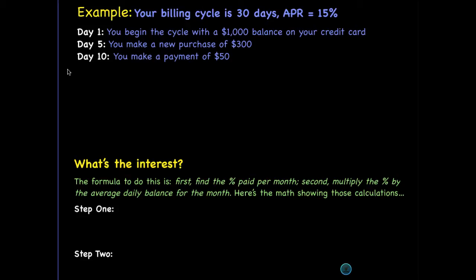You did nothing for four days. Then on day five, you made a new purchase of $300, which would increase your balance. Then again, you did nothing for about five days. And then on day 10, you made a payment of $50 — maybe that was your minimum payment.